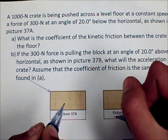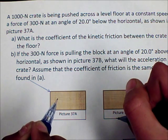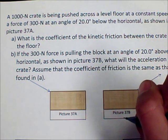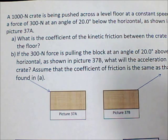Hi, this is Mia, and this is Maria, and today we'll be working on Chapter 4, Problem 37, which involves a 1,000 newton crate being pushed and pulled across a level floor.